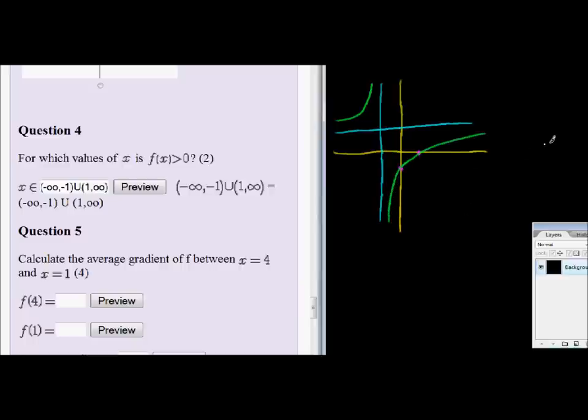So what is the average gradient? Well, if we take any two points, let's take around about this point and that point. The average gradient would be the gradient of the line between those two points. In other words, if I were to connect those two points with a line, it would be the gradient of that line.